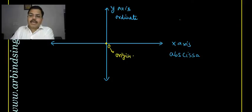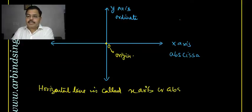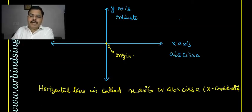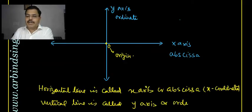The horizontal line is called the x-axis, also known as the abscissa, which refers to the x-coordinate. The vertical line is called the y-axis, and the distance measured along it is called the ordinate, which refers to the y-coordinate.